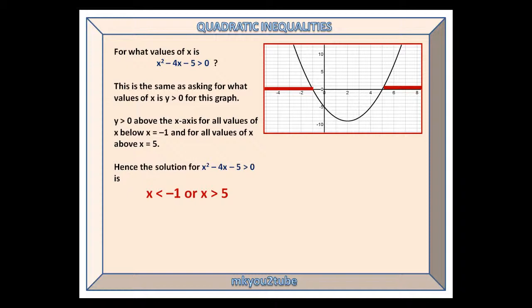Hence the solution for x squared minus 4x minus 5 greater than 0 is that x is either less than minus 1 or x is greater than 5 — two regions.